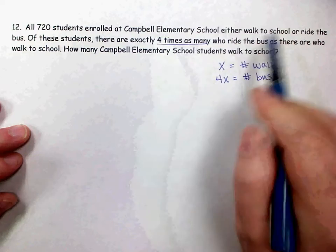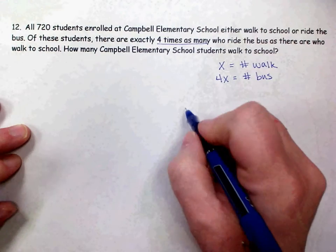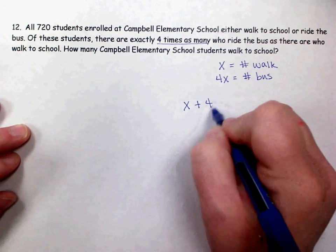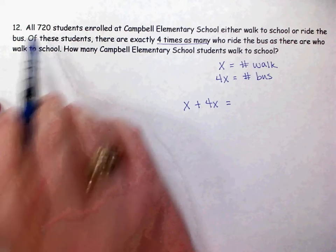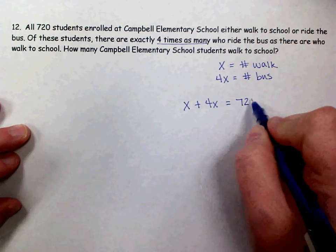So since it says all of them do one of these two things, when I add the x and the 4x together, that gives me the whole population of the school, which is 720.